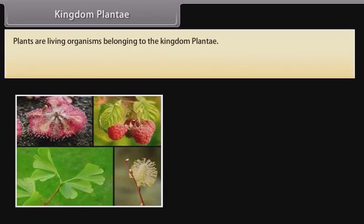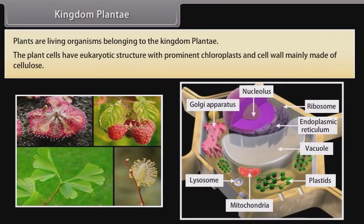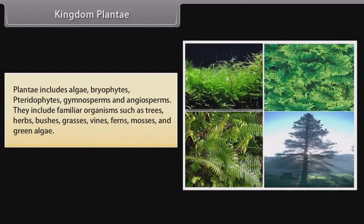Kingdom Plantae: Plants are living organisms belonging to the kingdom Plantae. The plant cells have eukaryotic structure with prominent chloroplasts and cell wall mainly made of cellulose. Plantae includes algae, bryophytes, pteridophytes, gymnosperms and angiosperms. They include familiar organisms such as trees,